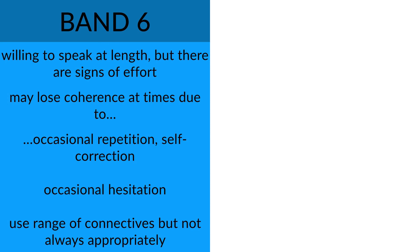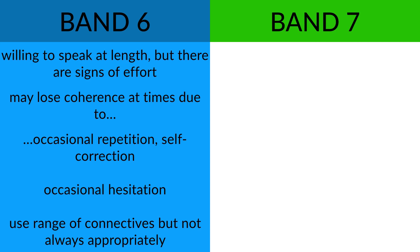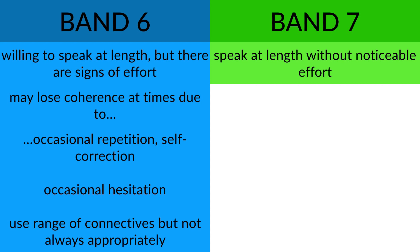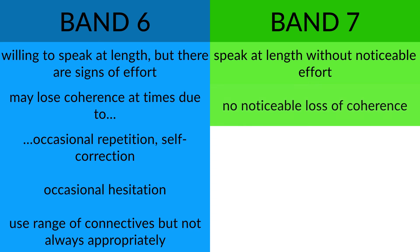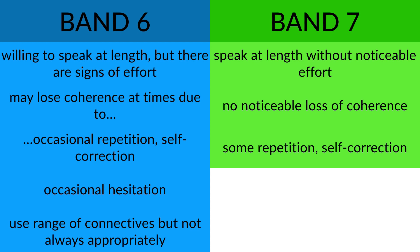What about band 7? At band 7, a candidate speaks at length without noticeable effort — this is a big difference. At band 6, the IELTS examiner can detect signs of effort, but at band 7 the examiner won't notice the strain. A band 7 candidate is quite at ease speaking for a long time, especially in part 2, and there will be no noticeable loss of coherence — the structure of their ideas is maintained. This is partly because they don't tend to repeat themselves as much. There can be some repetition and self-correction, but it doesn't really affect the coherence of their ideas.